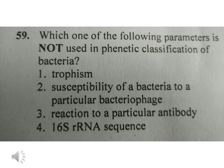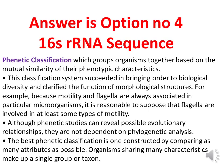First question: which one of the following parameters is NOT used in phenetic classification of bacteria? Options are: tropism susceptibility of a bacteria to a particular bacteriophage, reaction to a particular antibody, and 16S rRNA sequence. The right answer is option number four, that is 16S rRNA sequence.